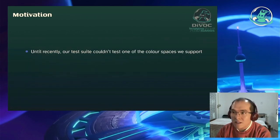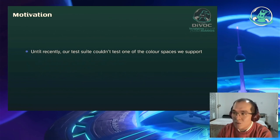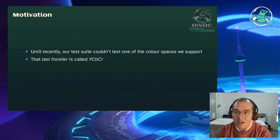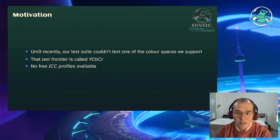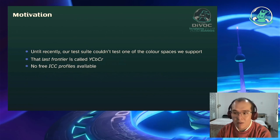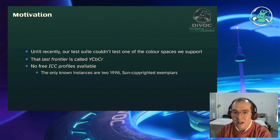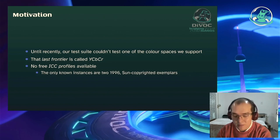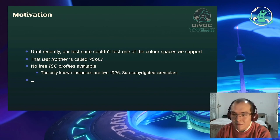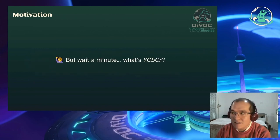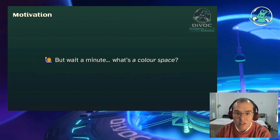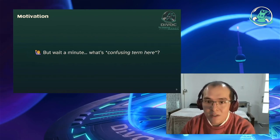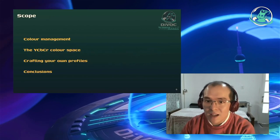Warum ist das wichtig? Bis vor kurzem hat unsere Test-Suite immer nur einen Farbraum getestet: YCbCr. Wir konnten keinen anderen machen, weil es kaum andere frei verfügbare ICC-Profile gibt. Es gibt nur zwei von 1996 von Sun Systems, die auch kopyrighted sind. Das wirft Fragen auf: Was ist überhaupt YCbCr? Was ist ein Farbraum? Was ist ein ICC-Profil? Das möchte ich in diesem Talk beantworten.